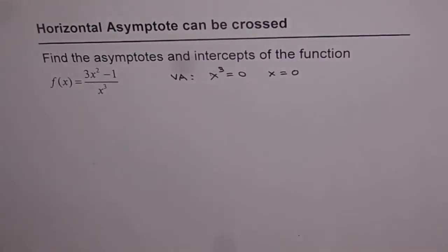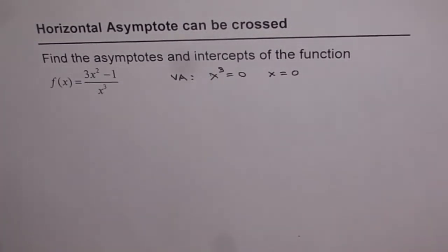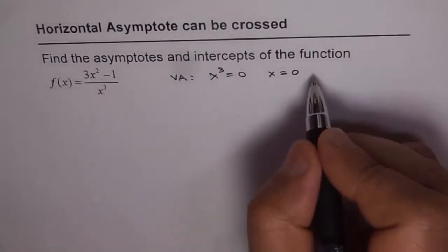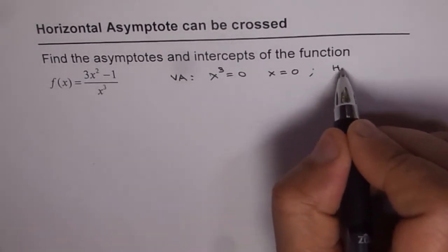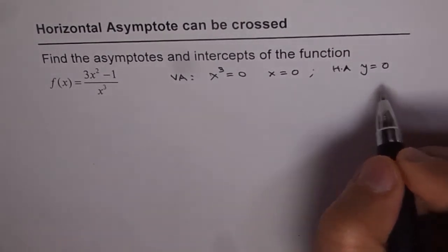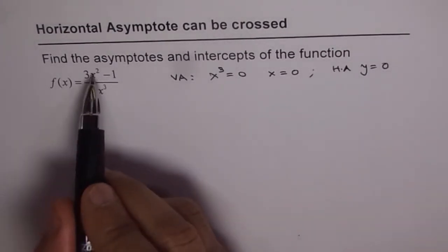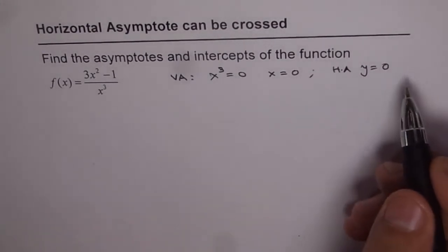Now what is the horizontal asymptote? To find the horizontal asymptote, let's check the degree of the numerator and denominator. The degree of the numerator is actually lower than the degree of the denominator. Since the degree of the numerator is lower, we do have a horizontal asymptote, and we can write this as y = 0. Since the degree of the numerator is lower than that of the denominator, the horizontal asymptote is y = 0.